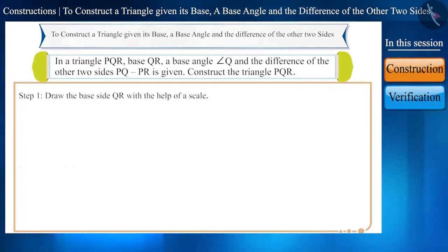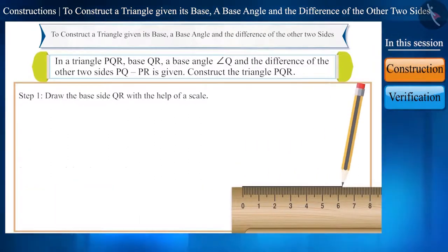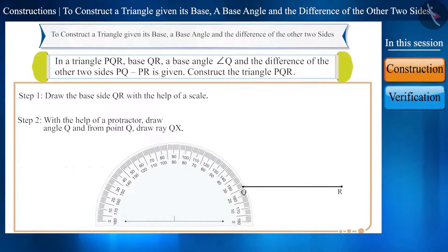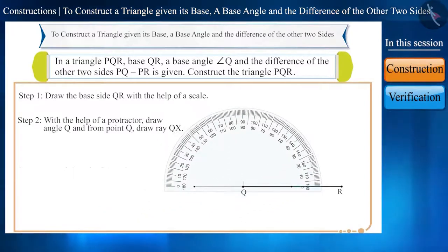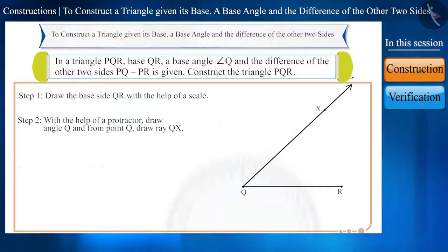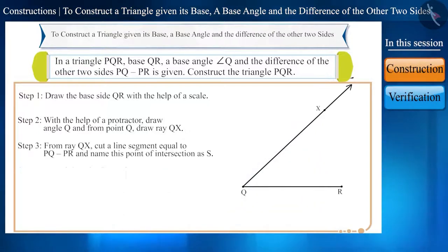Step 1. First of all, we will draw the base side QR with the help of a scale. Step 2. With the help of a protractor, we will construct the given angle Q and from point Q, we will draw a ray QX.